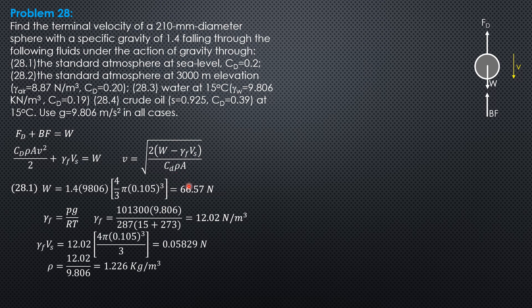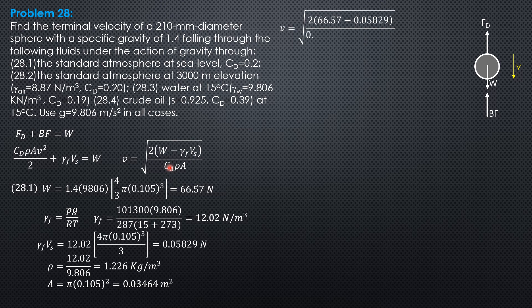The projected area is π times radius squared: π times 0.105² = 0.03464 square meters. Substituting into the terminal velocity formula: V = √(2 × (66.57 − 0.05829) / (0.2 × 1.226 × 0.03464)), giving a terminal velocity of 125.1 meters per second.